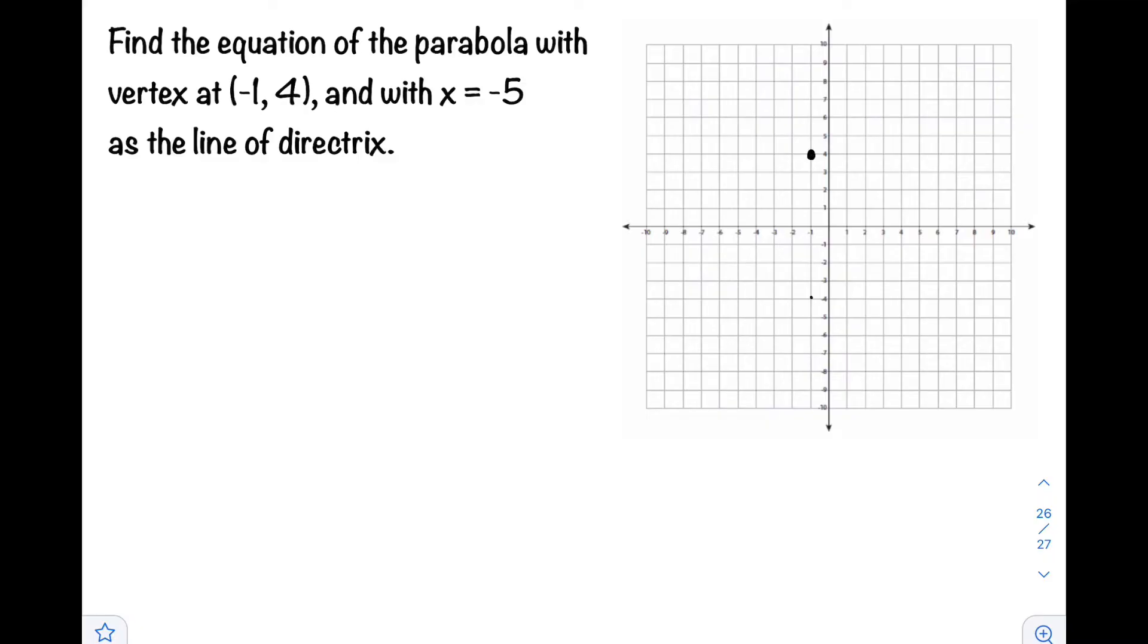Then the line of directrix with x = -5 is on the x-axis. We have a vertical line here that serves as our directrix.